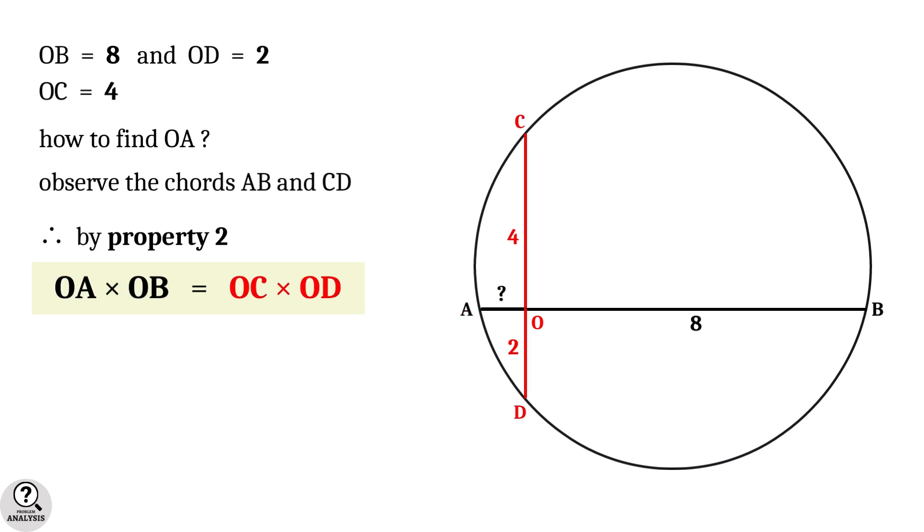Hence, by property 2, we get the product of OA and OB equals the product of OC and OD. Substituting the values, we get OA times 8 equals 4 times 2, which implies OA equals 1.